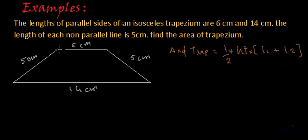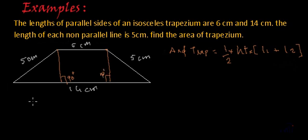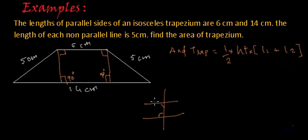The height is the minimum distance between the parallel sides. If I draw a perpendicular from a corner point to the line of 14 centimeters length, that angle is 90 degrees — this will be the height. Similarly, the other perpendicular will also be the height and that angle will also be 90 degrees. Using the property of parallel lines with a transversal, the interior angles on one side sum to 180 degrees, so these angles are each 90 degrees.